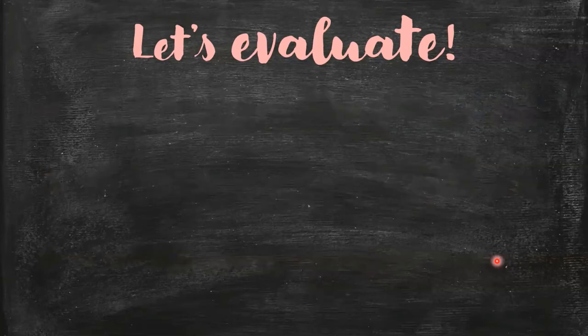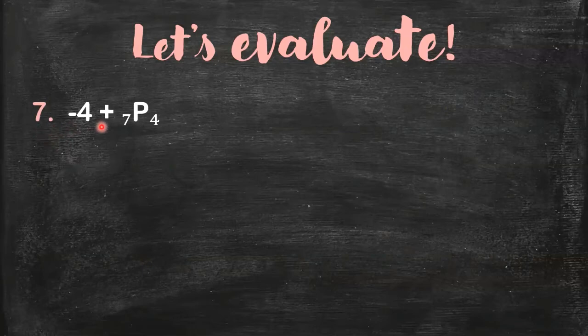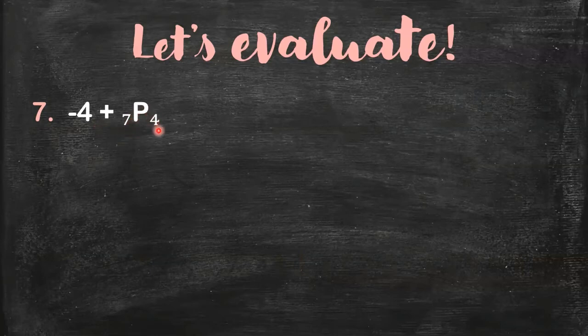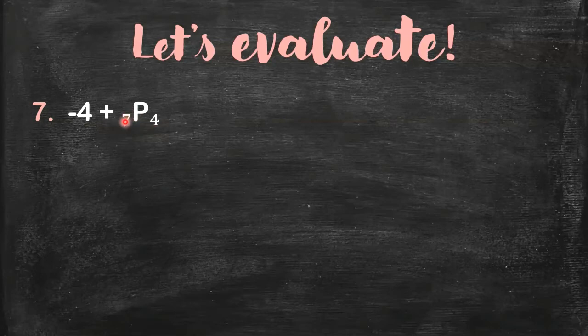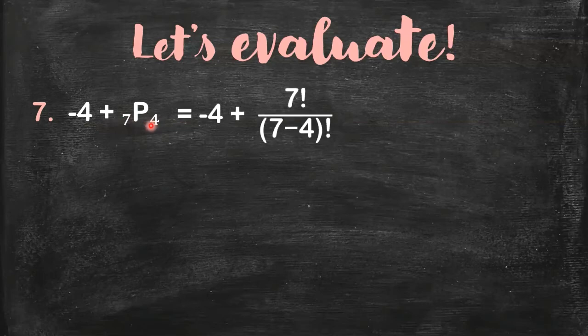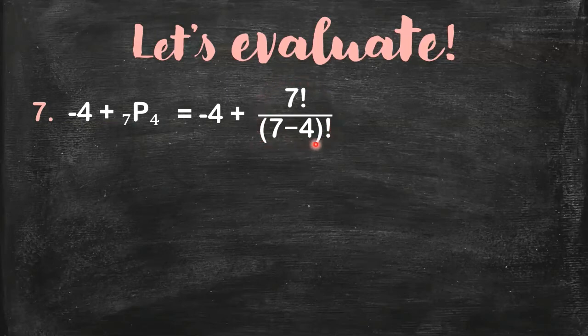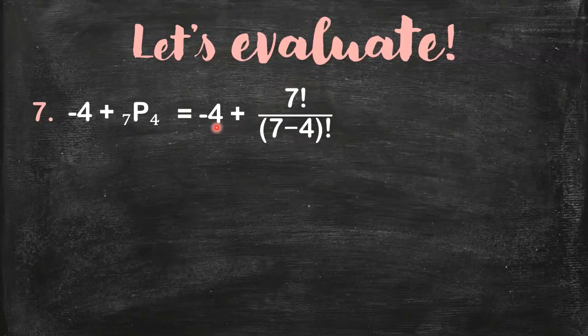More examples. Here. For number 7, we have -4 + 7P4. Again, if you're not comfortable with this permutation notation, you may want to write it as P(7,4). This is your n, this is your r. So you'll have this. I wrote it in terms of factorials. 7 factorial divided by (7-4) factorial. So all you have to do is simplify this, then add the negative 4. Same thing you'll do.